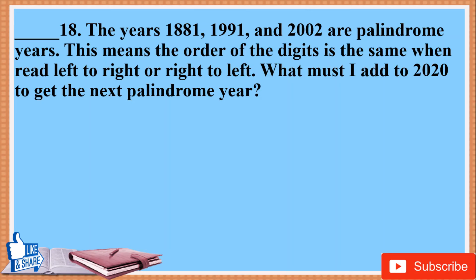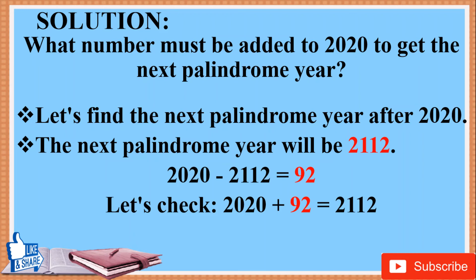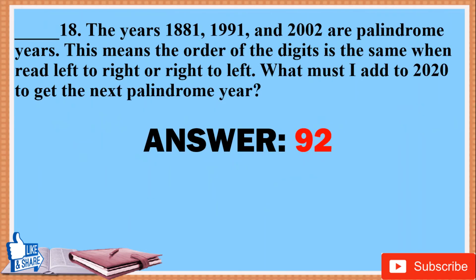18. The years 1881, 1991, and 2002 are palindrome years — the order of digits is the same when read left to right or right to left. What must I add to 2020 to get the next palindrome year? Solution: The next palindrome year after 2020 is 2112. 2112 minus 2020 equals 92. Check: 2020 plus 92 equals 2112. Answer: 92.